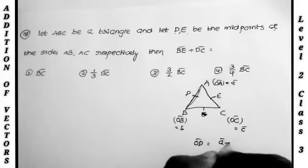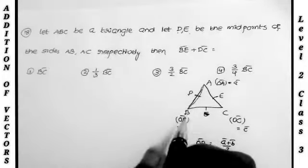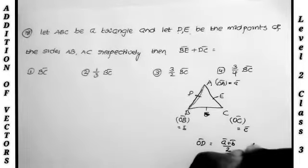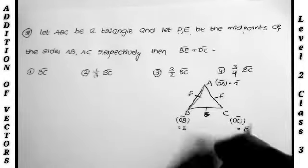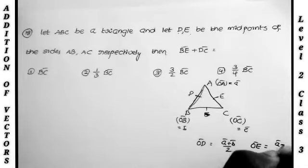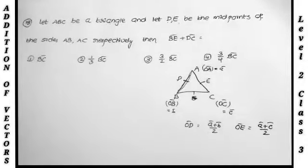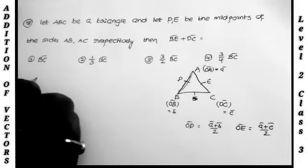Since D is the midpoint of AB, OD bar equals A bar plus B bar by 2. Since E is the midpoint of AC, OE bar equals A bar plus C bar by 2.